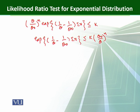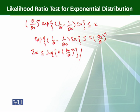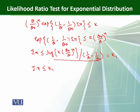We take the log, giving sum(x) less than or equal to log(k * (theta naught/theta)^n) divided by (1/theta - 1/theta naught). We call this whole term k1, so we have sum(x) less than or equal to k1.